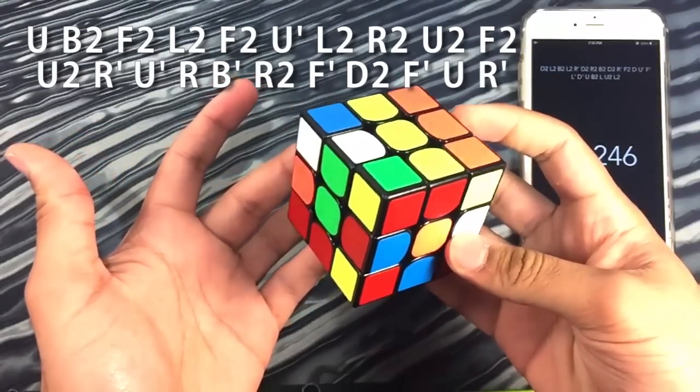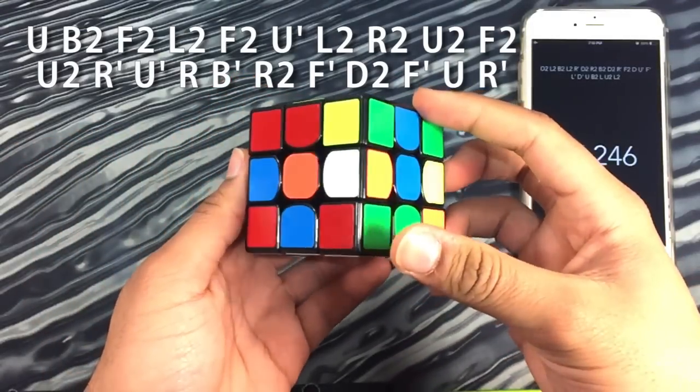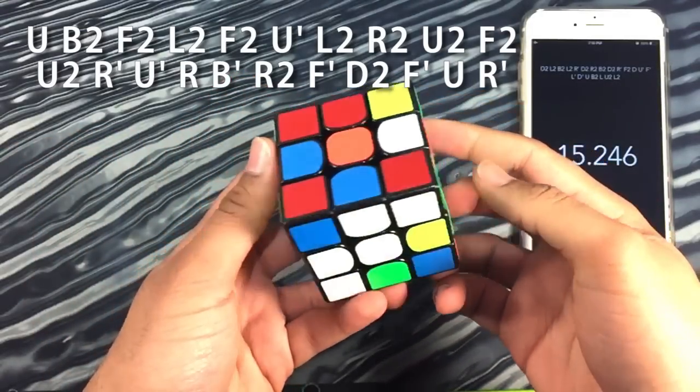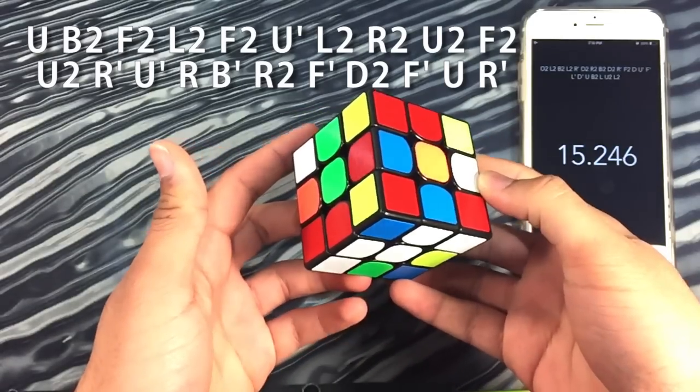So here's the first scramble and I scrambled all these cubes with green in front and white on top so I highly recommend that you scramble your cubes and follow along because it'll be a lot easier to remember things.